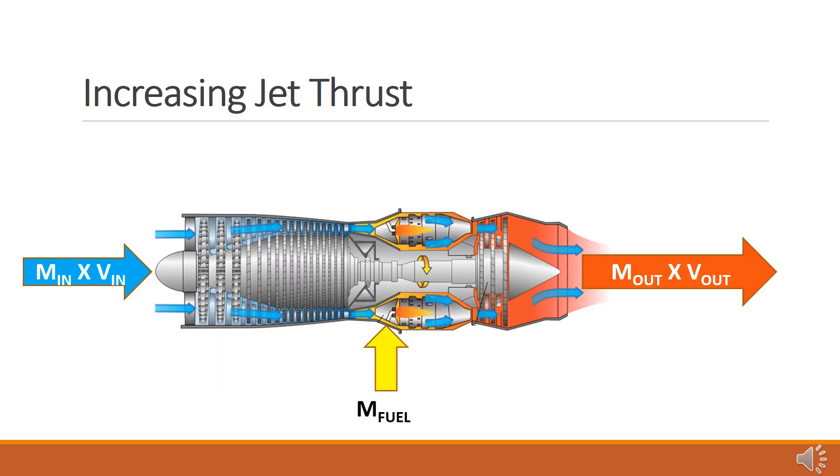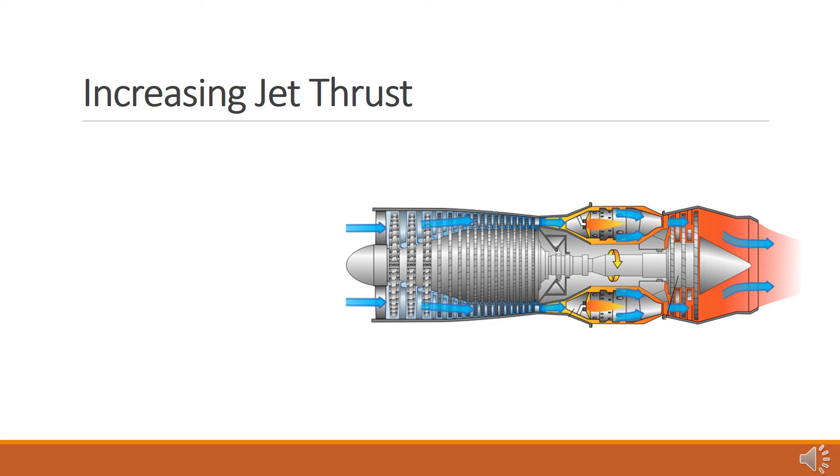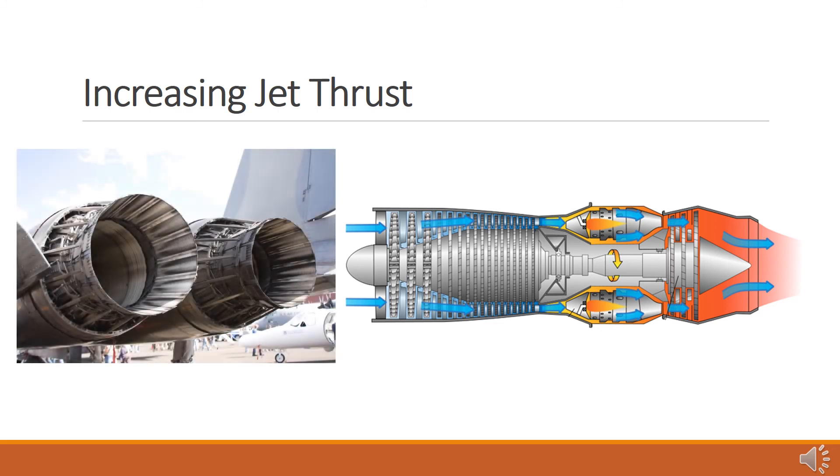To increase the thrust produced by a jet engine, the exhaust gases must undergo an increase in velocity, an increase in mass, or both. Unlike a propeller, the mass of the gas exiting the jet is the sum of the masses of the molecules of air and the mass of the molecules of the fuel consumed in combustion. Propelling nozzles may have a fixed opening or they may have openings that may be widened or narrowed to speed up or slow down the velocity of the exhaust gas, which would increase or decrease the thrust generated by the engine.